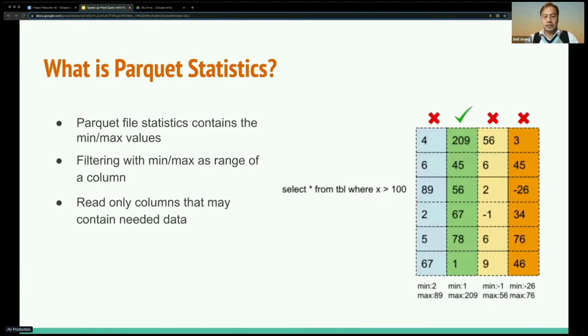So what is Parquet statistics? Parquet file statistics contains the min-max values of each column. Consider the min-max value as the range of the column data. When you have a filter, you can utilize that range to filter out unnecessary data so that you don't need to read them and save I/O. Here's an example. You have a column across four different row groups and each has a range. In the chart, only the second column chunk is falling into the range of the filter needed, which is X greater than 100. So you don't need to read all three other column chunks at all.